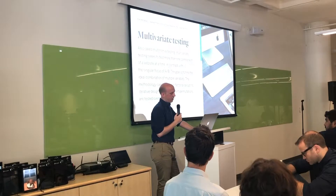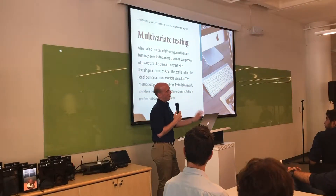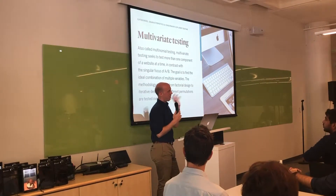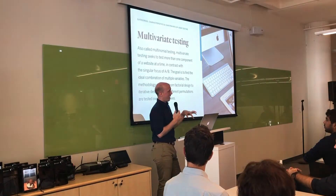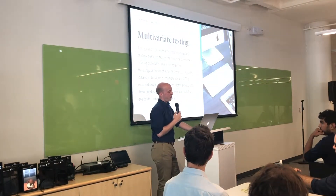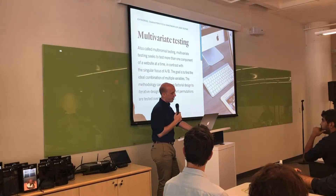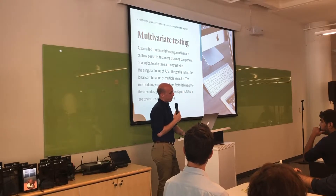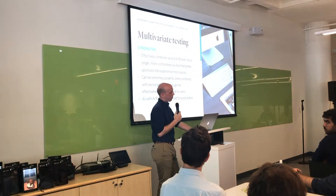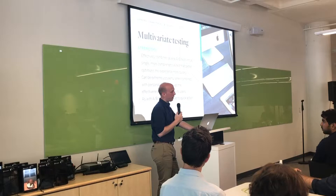Next up is multivariate, also called multinomial testing. It's kind of like doing a lot of A/B tests together. There are different ways to design it - one way is factorial design, where you do every single possible combination of those different variables that you're testing. If it's a lot of variables, that can be a really massive undertaking. Other ways are to do it in waves - a few at a time, and once you've settled on those, you introduce another few behind that. This falls victim to a lot of the same strengths and weaknesses as A/B testing, but you can get information more quickly if you do a lot of these together.